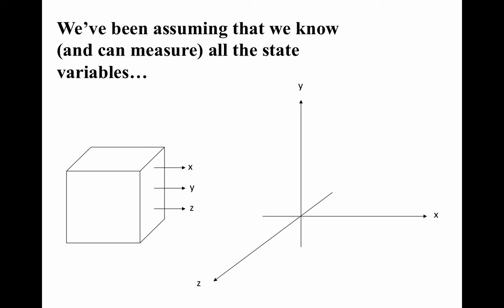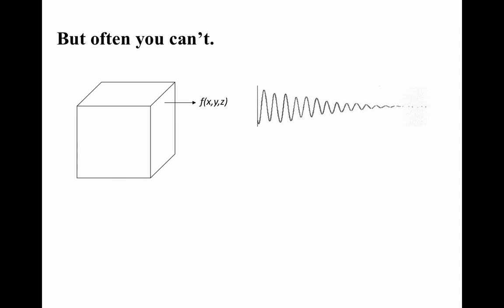Going back to dynamical systems: when you have time series data from a dynamical system, your measurement may be of one of the state variables, but that's not always possible. In a complicated dynamical system, you may not know what all the state variables are. And even if you did know what they were, it might be hard to measure them. And even if you can measure them, you may not be able to do that without affecting the dynamics of the system. You generally have a measurement of one quantity that's some function of some number of the state variables.